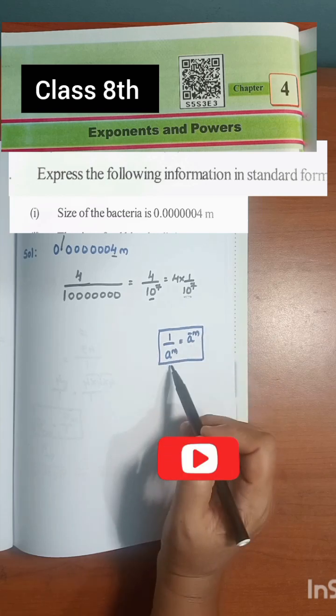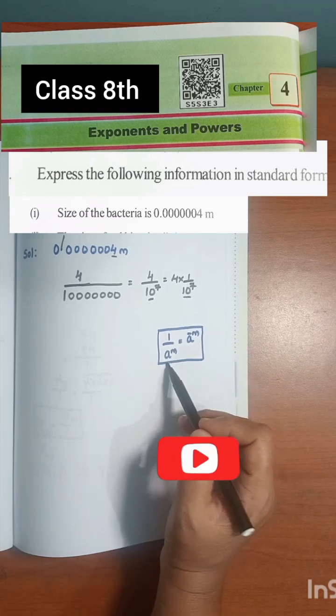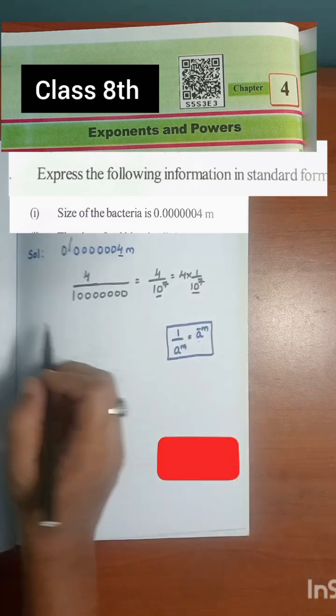So this is in the form of 1 by a to the power of m. Then the formula is: a to the power of minus m.